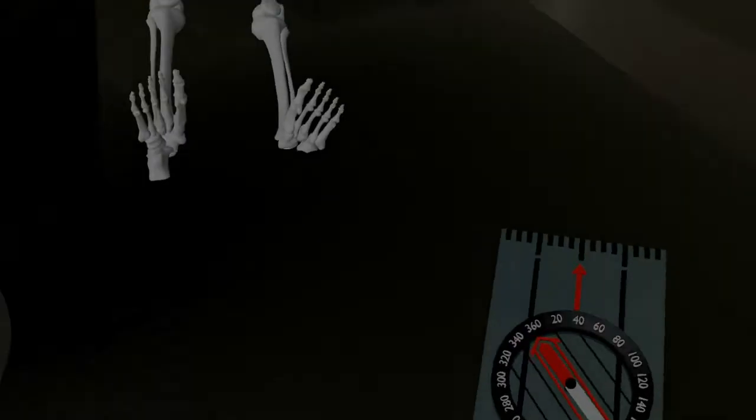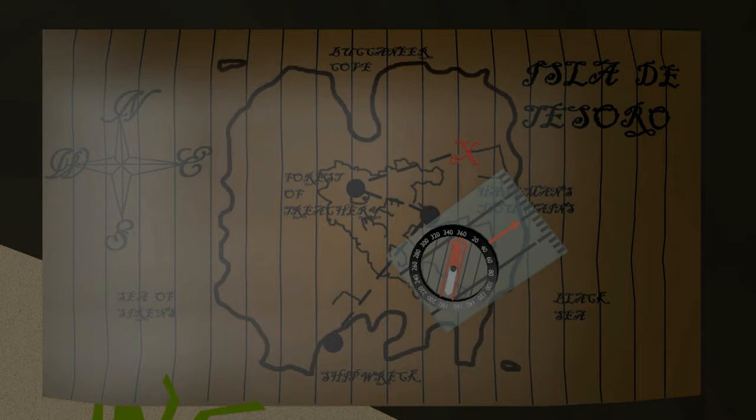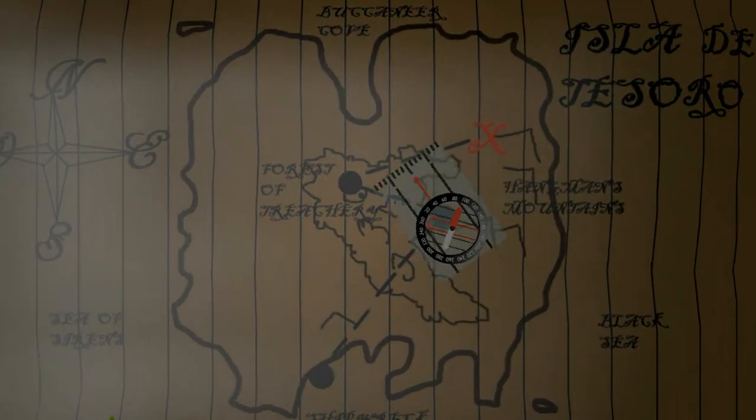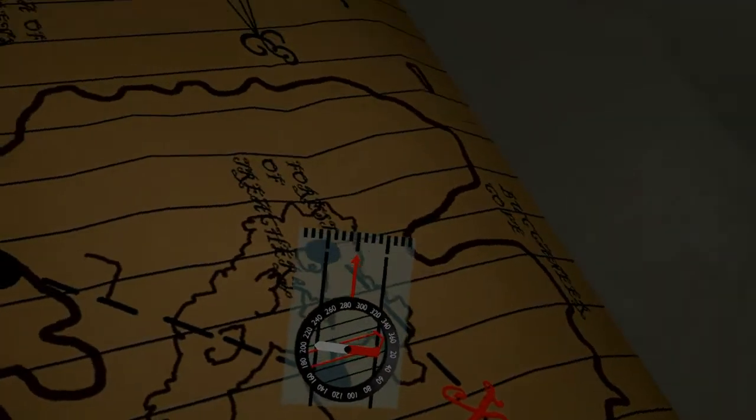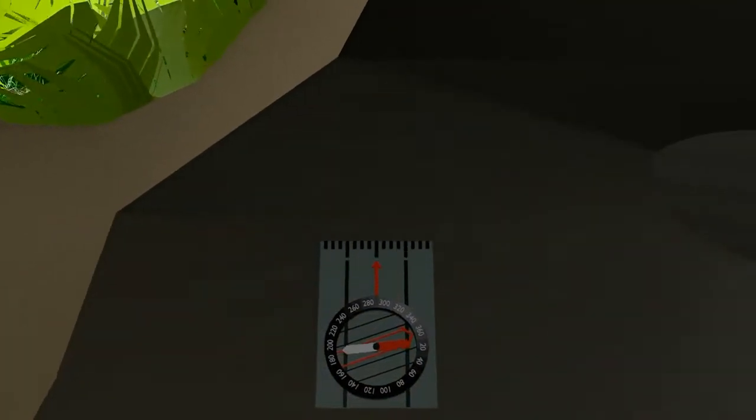Now that we have the second map, let's do it again. We know that we're here. Point the red arrow from where we are to where we want to be. Line up the hollow arrow with north on the map. Now line the compass up so the hollow arrow is facing north. Head in the direction the red arrow points. And off we go.